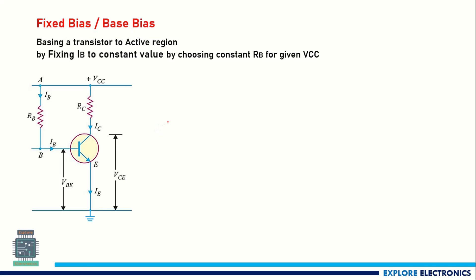Now let us look at the biasing methods. The first one is fixed bias, also called base bias. As the name implies, a parameter is made fixed to a value. In base bias, that parameter is at the base of the device — specifically, IB, the input base current, is kept constant.